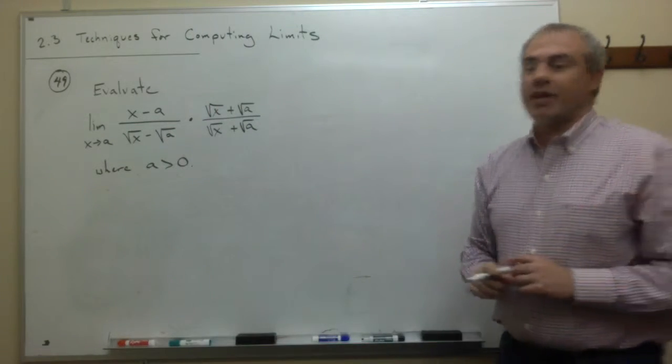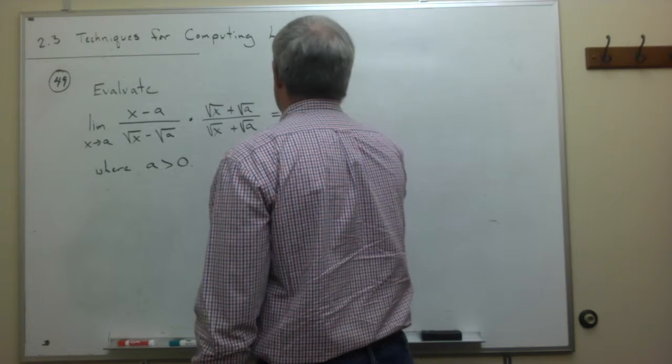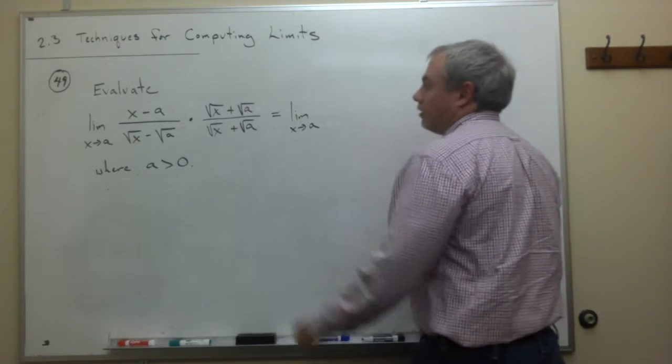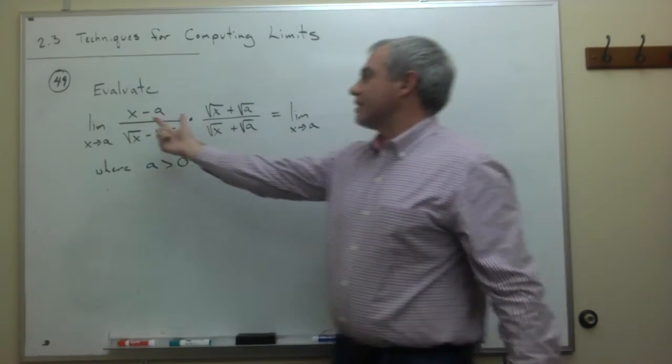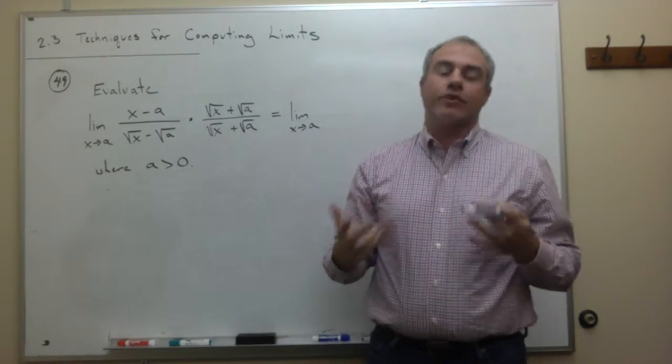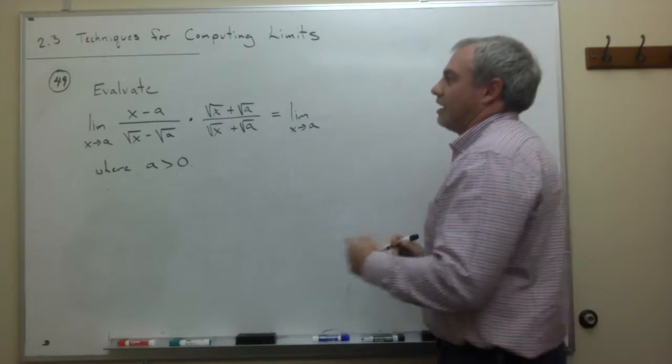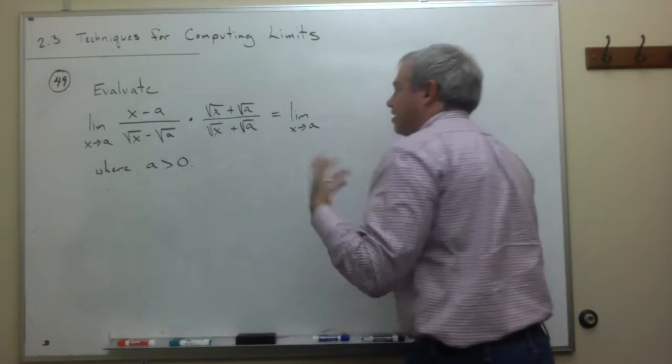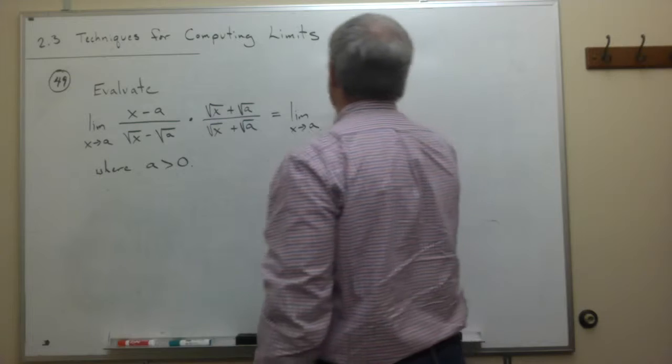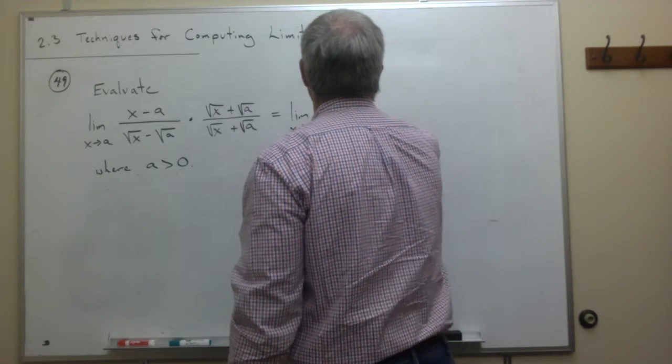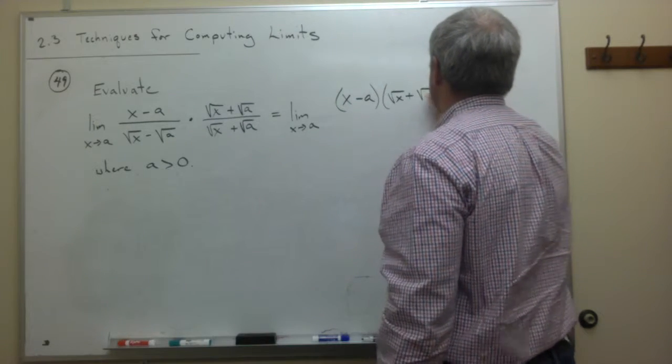Now, if I make this multiplication, let's see what we get. This is the limit as x goes to a of, on top, I'm not going to mess around with multiplying this out. In fact, that's a really easy mistake to make here, is multiplying this out. Just leave it as it is. It's already kind of messy, so let's not make it more of a mess by multiplying it through. So what we get on top is we get an x minus a times the square root of x plus a square root of a.